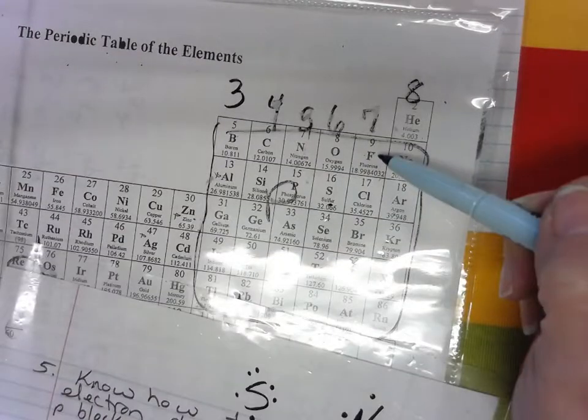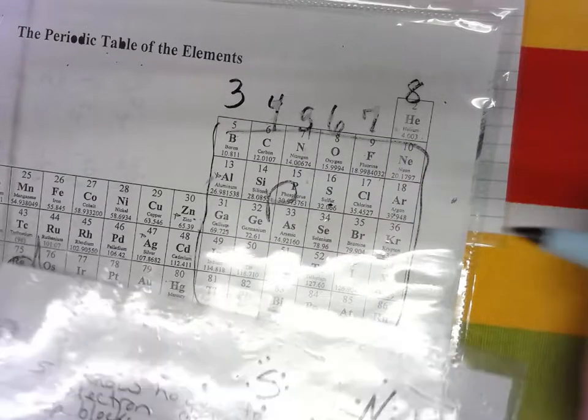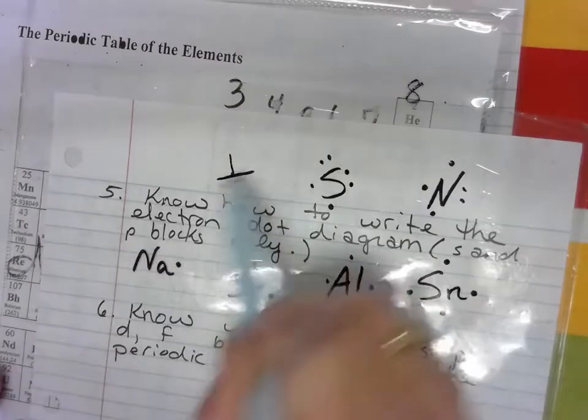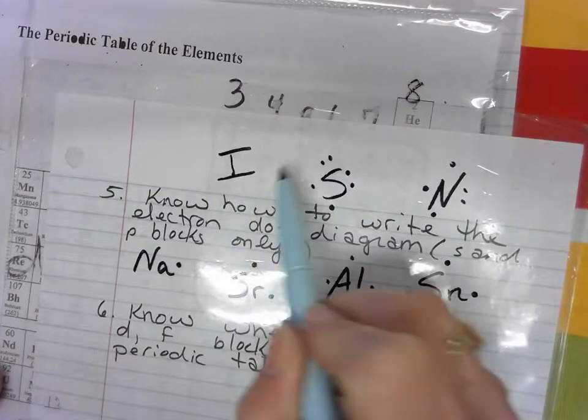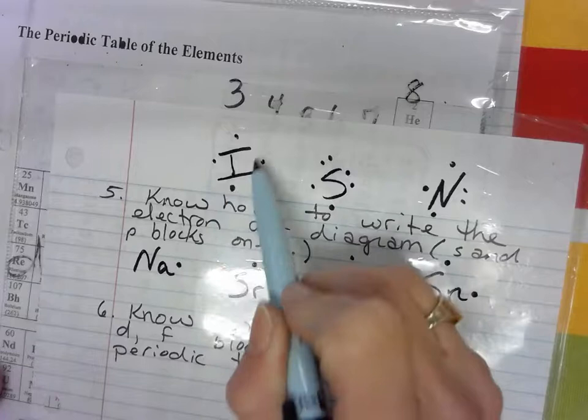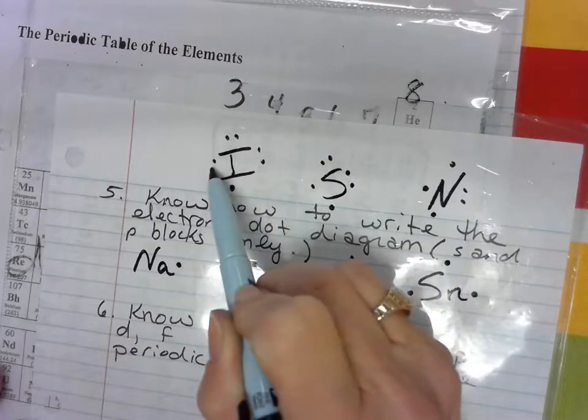Our halogens, we can do iodine. It has seven valence electrons. So we write one, two, three, four, five, six, seven.